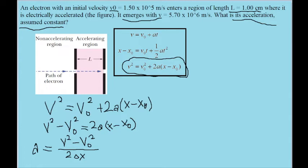The initial velocity, 1.50 times 10 to the fifth power meters per second, can go in for v-naught, the initial speed. 5.70 times 10 to the sixth power meters per second is the final speed, since that's what it emerges with. And for x, for the displacement, the problem gives us that as one centimeter.